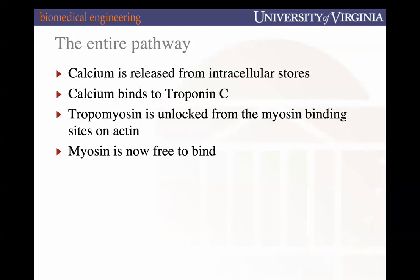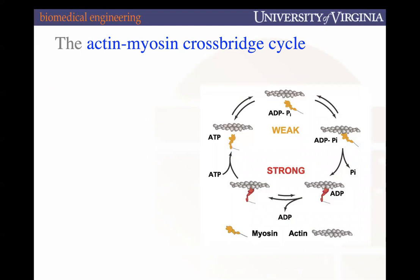To quickly summarize the entire pathway: calcium is released in response to a neural trigger from intracellular stores. Within striated muscle, calcium binds to troponin C. That binding unlocks troponin I, the inhibitory subunit, and ultimately unlocks tropomyosin to enable it to diffuse away and permit myosin to bind to actin. We're now going to describe what that contraction looks like as defined by the actin-myosin crossbridge cycle.